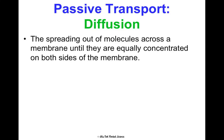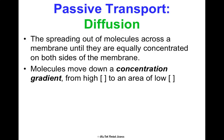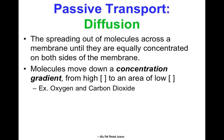Diffusion is the spreading out of molecules across the cell membrane until they're equally concentrated on both sides. This is passive — molecules move down the concentration gradient from high to low. A real example is oxygen (O₂) and carbon dioxide (CO₂), which diffuse passively across your cell membranes so all cells receive the oxygen they need and carbon dioxide is removed.